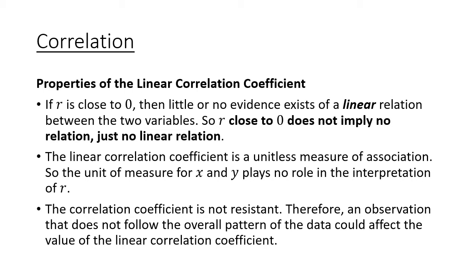If r is close to zero, then there's no evidence that a linear relationship exists. It won't be describable with any sort of linear model—anything that's a line. That doesn't mean that there's no relationship whatsoever, because obviously there could be like a quadratic or some other pattern. This is just for lines.